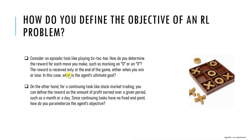In trial-and-error learning, which we also do in real life, the agent explores the environment by taking actions, observes the resulting state and reward, and updates its policy accordingly. The ultimate goal of an RL agent is to maximize cumulative reward over time by learning an optimal policy that maps states to actions. This can be achieved through value-based methods, policy-based methods, or a combination of both.